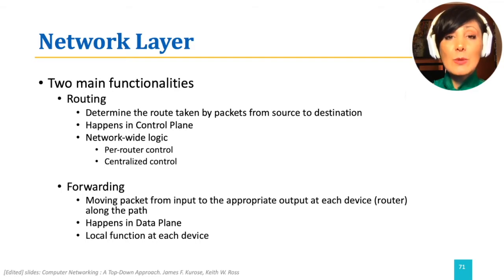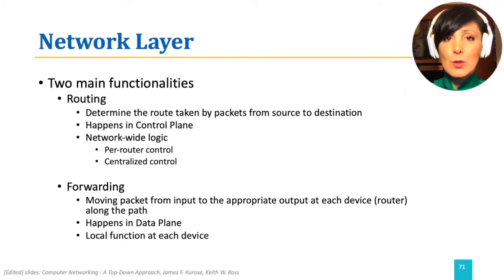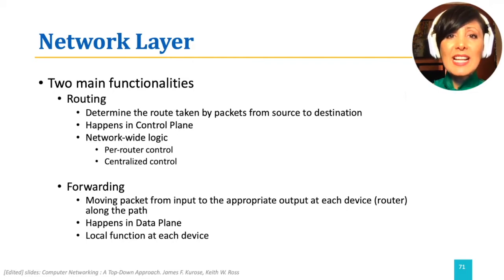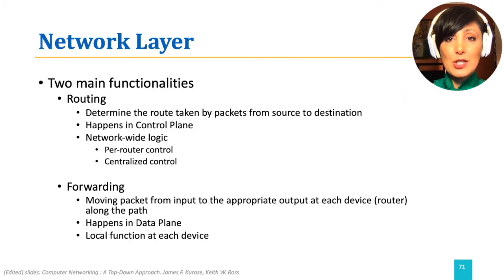Routing determines the route taken by packets from the source to the destination. Forwarding moves packets from input to the appropriate output at each device or router along the path, and happens in the data plane. We discussed forwarding as it happens in traditional destination-based forwarding, as well as generalized forwarding in software-defined networking. We now want to discuss routing, starting with traditional routing.